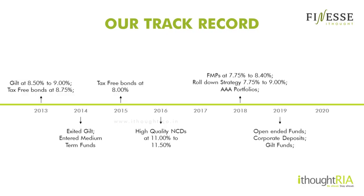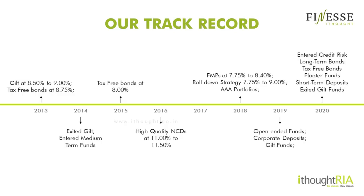Then in 2019, as the crisis was easing out a little bit, we switched from closed-ended or roll down structures to more open-ended funds. We also looked at corporate deposits and GILT funds where we saw significant value. Then in 2020, we exited these GILT funds and continued our stance on short-term fixed deposits. We started seeing value in floater funds. In the early part of 2020, we saw merit in tax free bonds. And throughout 2020, we also looked at long term bonds and NCDs, and we were positive on credit risk as well during this phase.